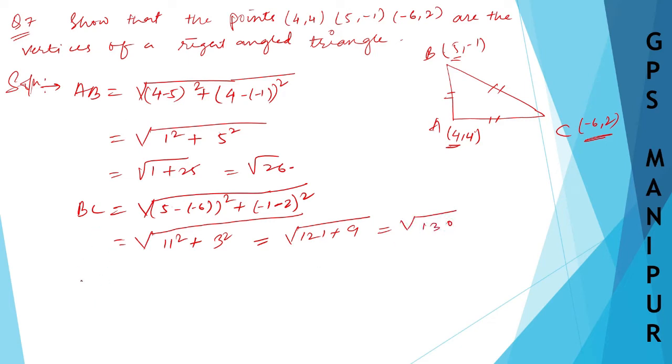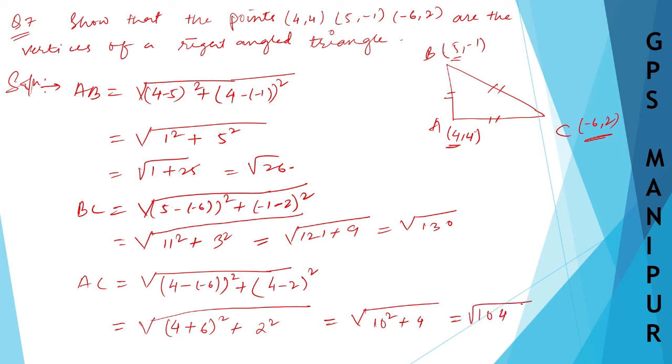Next, AC. AC will be equal to (4 minus minus 6) whole square plus (4 minus 2) whole square. Which will be equal to root over (4 plus 6) whole square plus 2 square. So which will be equal to root over 10 square plus 4, so 100 plus 4 equals root over 104.